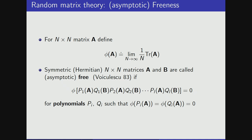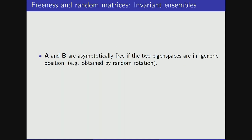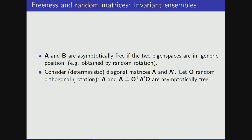Since these matrices A and B do not commute, we will have this specific order. If we have this condition — the vanishing of phi, given that the individual terms have sort of zero mean — then we call them free. In particular, A and B are asymptotically free if the two eigenspaces are in generic position, for instance obtained by a random rotation. This fits very much into the framework of rotationally invariant random matrix ensembles. One important thing: if we have two deterministic diagonal matrices lambda and lambda-prime, and we consider a random rotation, then matrix A generated by a random rotation from the lambda-prime matrix and lambda are typically asymptotically free.